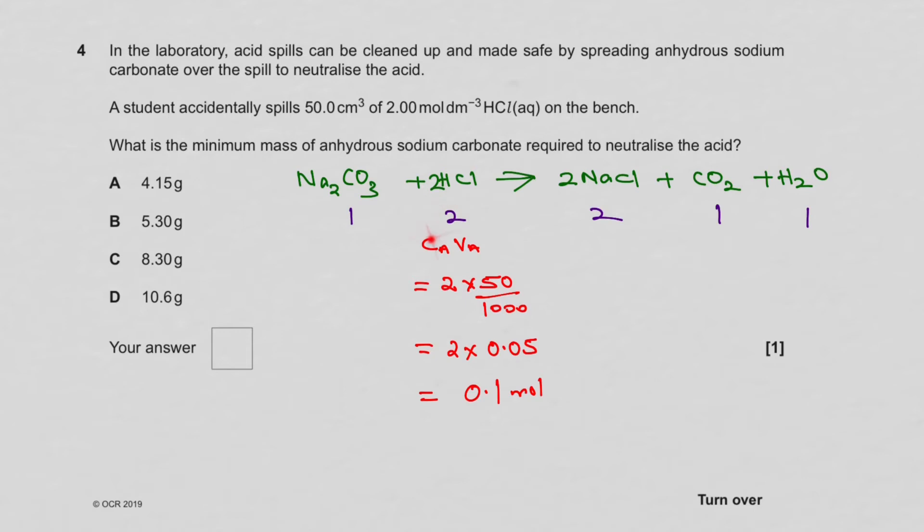Now we know that from the given data, we know that 50 cm³ of 2 molar HCl, and therefore we do concentration times volume. And so concentration is 2 times the volume is 50 over 1000 to get dm³, and that is 2 times 0.05, and that would be 0.1. So that's the mole of that.